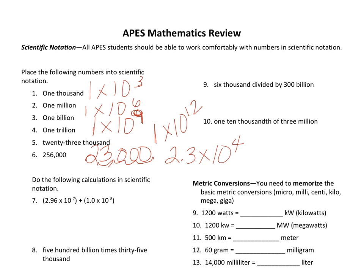With two hundred and fifty-six thousand, I move the decimal one, two, three, four, five times. So my answer is two point five six times ten to the fifth. And that's how you do the first six — starts out pretty basic.